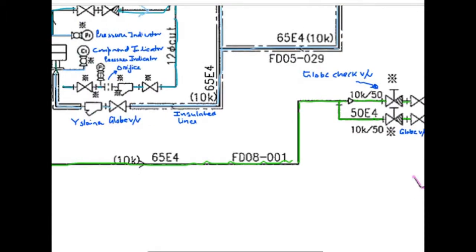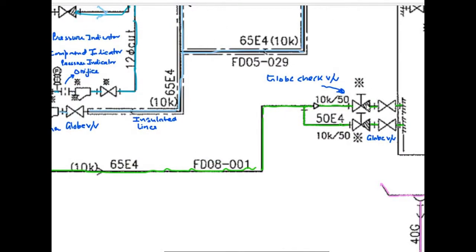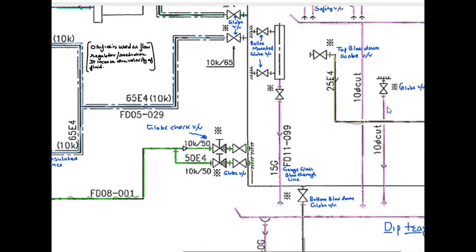They are going through globe check valve. Globe check valves are present and then globe valves are present. Means, two valves are there. Check valves, you know, it is a safety. It is like a non-return valve. And other valve is there, globe valve.